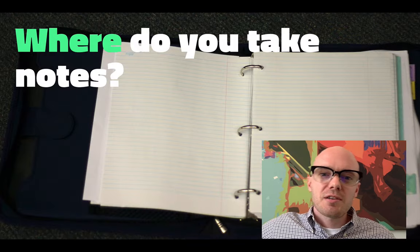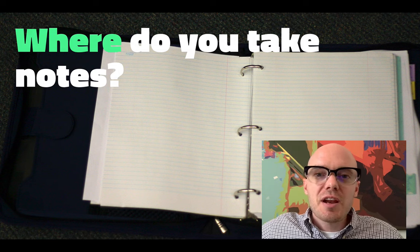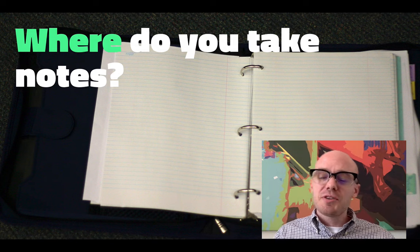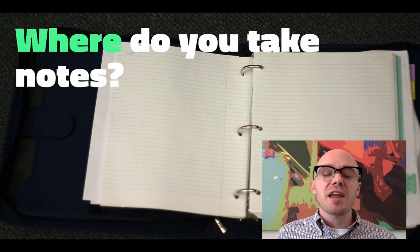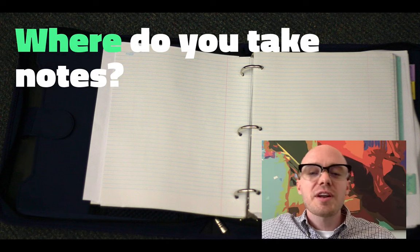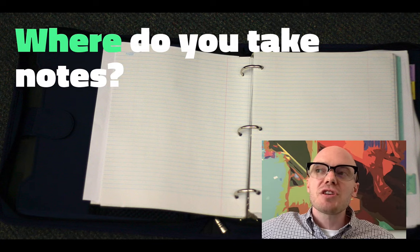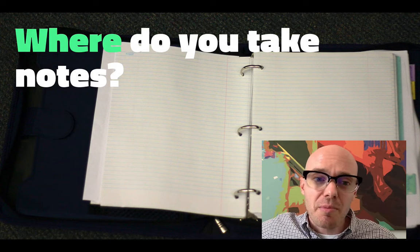One thing I would suggest is that you get a three-ring binder. You can take notes on individual pieces of paper, put them in the binder, reorganize them, add handouts, add articles, add all sorts of other information, and then let that information reorganize and evolve as your knowledge evolves or as new projects come up.